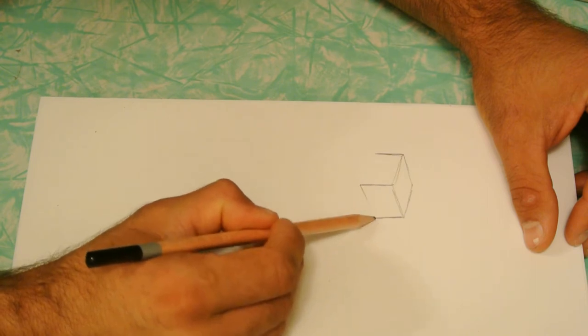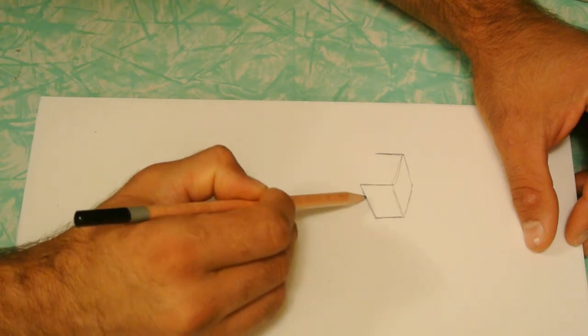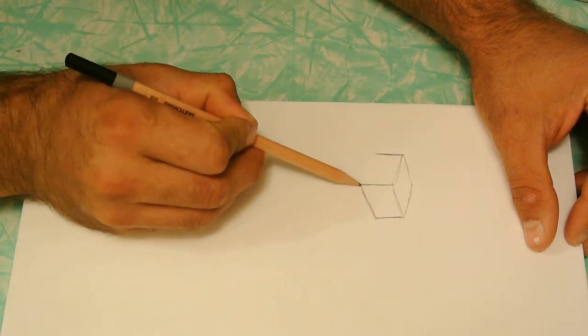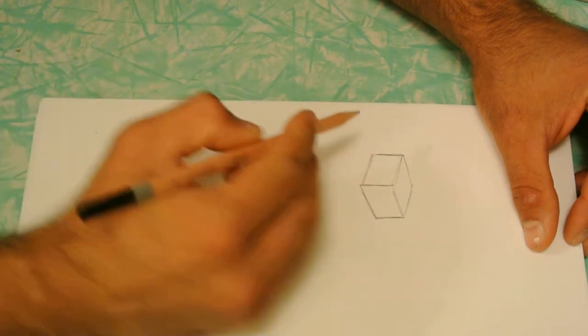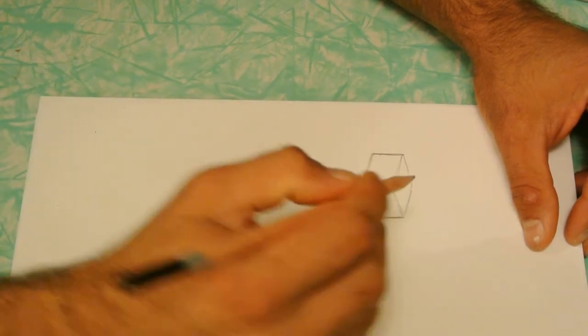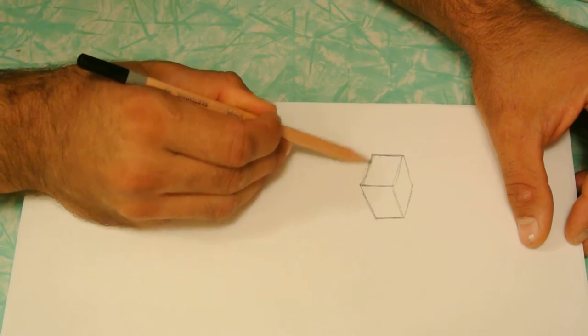Draw your middle line coming down, make it a little bit longer. Connect these lines, making sure these two sides are running together. There's your cube.